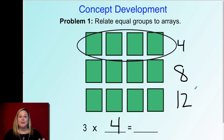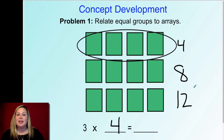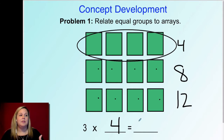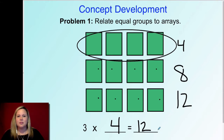You can skip count by fours: four, eight, twelve. If you're fluent with that, rock on. If you're not fluent skip counting by fours, count the rows: four, five, six, seven, eight, nine, ten, eleven, twelve — that's perfectly fine too. So three times four gives me twelve. That's an array too, so you guys just solved two problems with two different arrays.